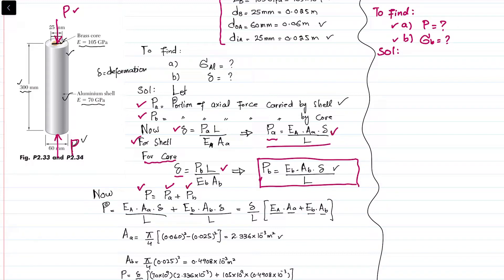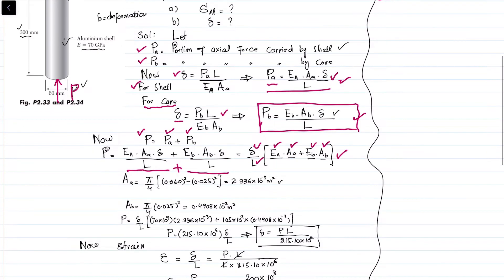You have to put the value of Pa plus Pb. When you substitute these values, you will get this equation. In this equation we have Ea, Aa, Eb, Ab, delta, and L. You can either put all the values and get the applied load P.